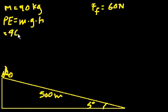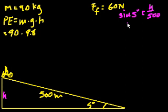What is the potential energy? Well, potential energy is equal to mass times the acceleration of gravity times height. That's equal to the mass, which is 90, times acceleration of gravity, 9.8 meters per second squared, times height. We're going to have to break out a little trigonometry. We need to figure out this side of this triangle. We want to figure out the opposite. We know the hypotenuse and we know this angle. So sine of this angle is equal to opposite over hypotenuse. So we know that sine of 5 degrees is equal to the height over 500, or that the height is equal to 500 sine of 5 degrees.